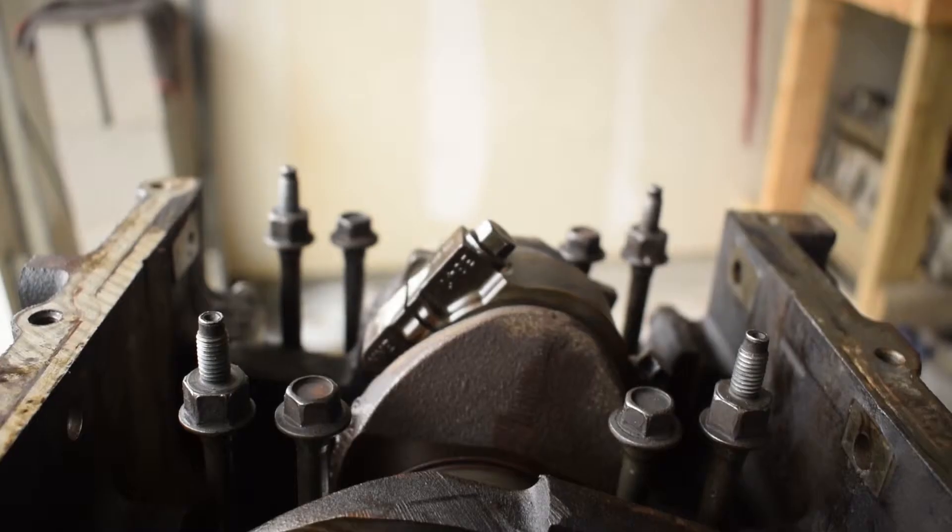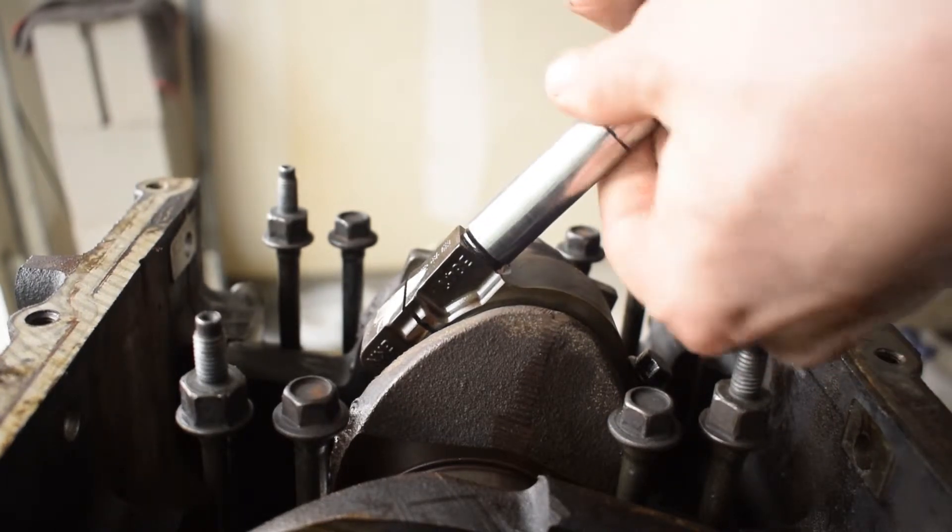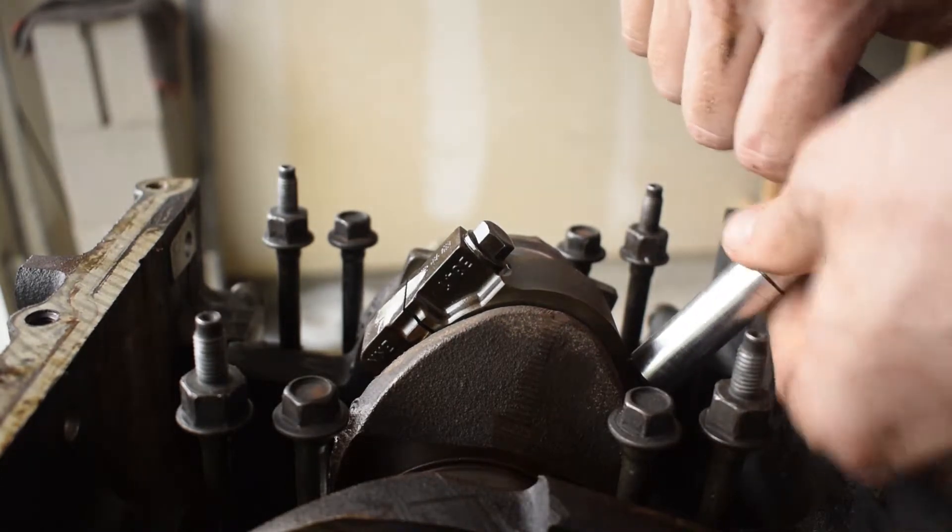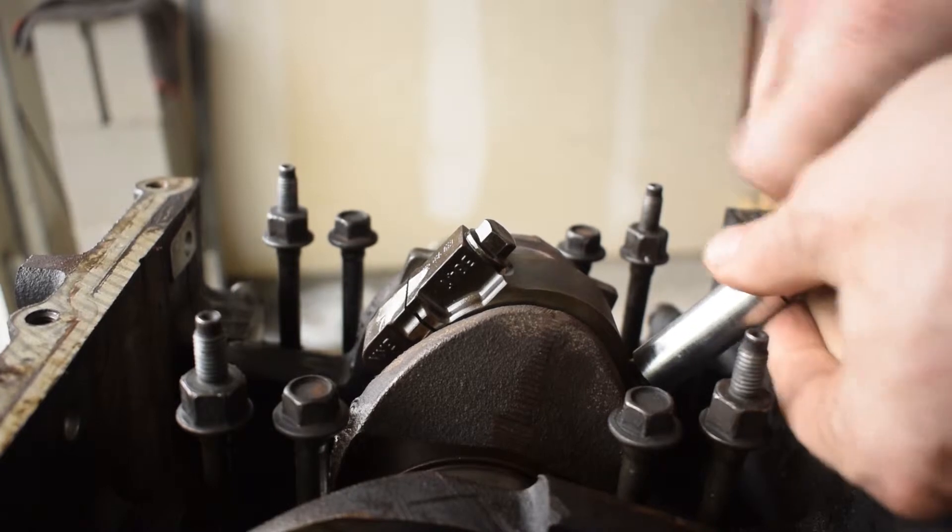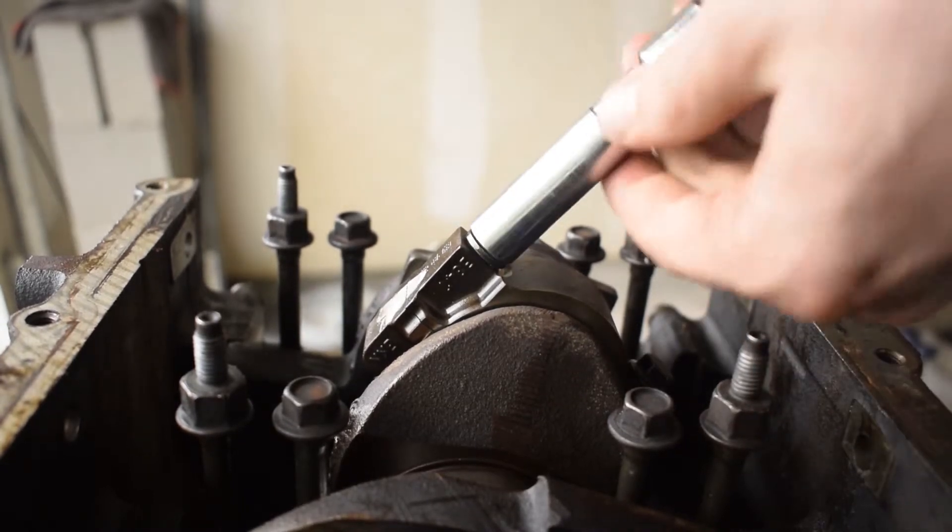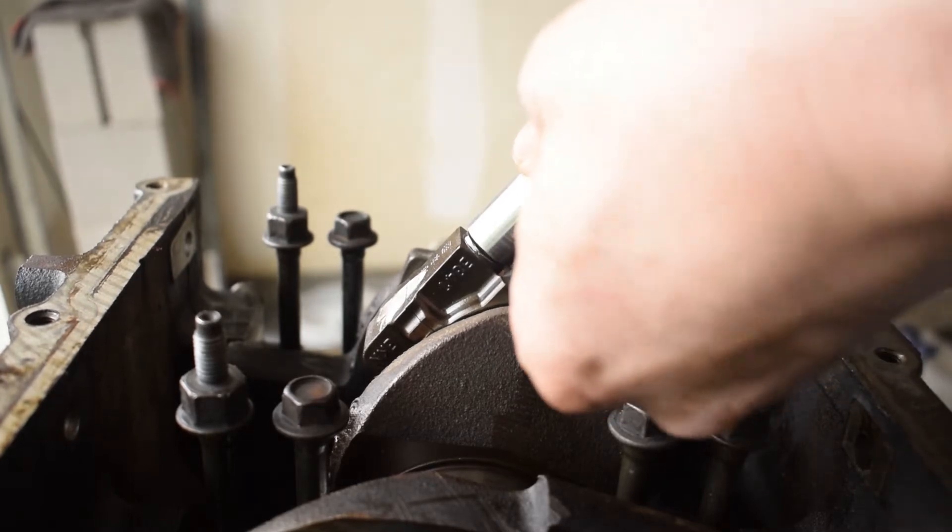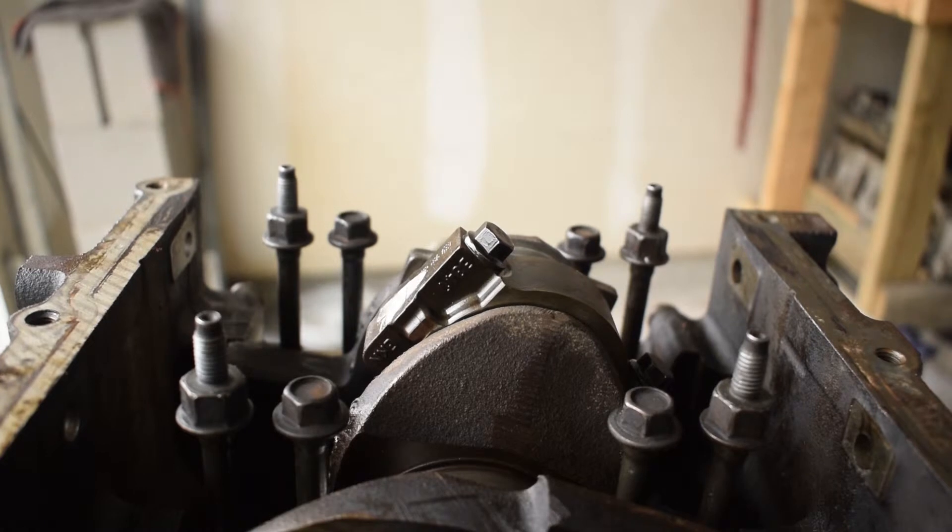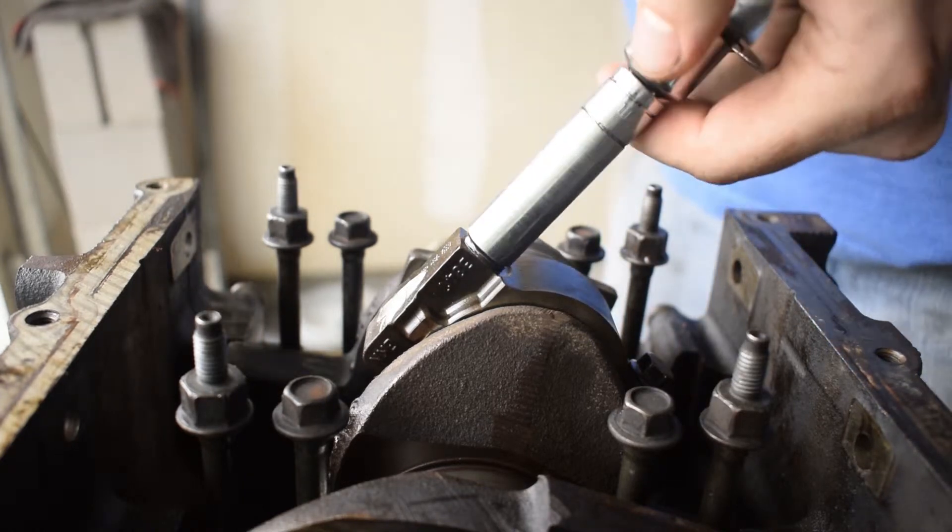We're gonna put a bearing on top of that and then we're gonna torque them down to spec. So what you want to do is we're gonna tighten these all the way down. Alright, got a torque wrench here. We're gonna torque these down to 15 pounds.